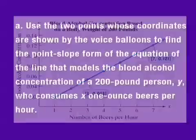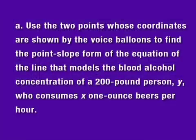Part A: Use the two points whose coordinates are shown by the voice balloons to find the point-slope form of the equation of the line that models the blood alcohol concentration of a 200-pound person, y, who consumes x one-ounce beers per hour.